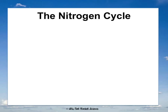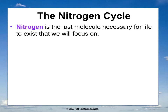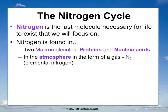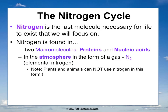We'll talk more about that in concept four on human impact on the environment. Now, the nitrogen cycle. Nitrogen is an element found in two macromolecules: proteins and nucleic acids. It's found in the atmosphere as N2 gas, referred to as elemental or atmospheric nitrogen. Plants and animals can't use nitrogen in this form, so most of the nitrogen cycle is about converting N2 into useful forms for plants. Nitrogen is also found in fossil fuels, waste like feces and urine, dead materials, and soil and aquatic sediments.